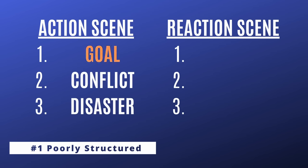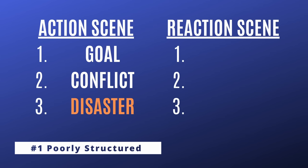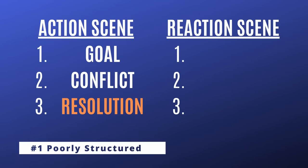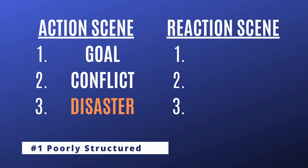It's a goal-oriented scene. The character has a goal — they want something. Then they face conflict, obstacles that prevent them from getting that goal. And then finally the scene ends in disaster — something goes wrong that makes the story continue in a new direction. Sometimes you might have goal-conflict-resolution, where resolution is a more positive outcome. But most of the time you want to end in disaster, because that keeps the story interesting and pushes it in a new direction.